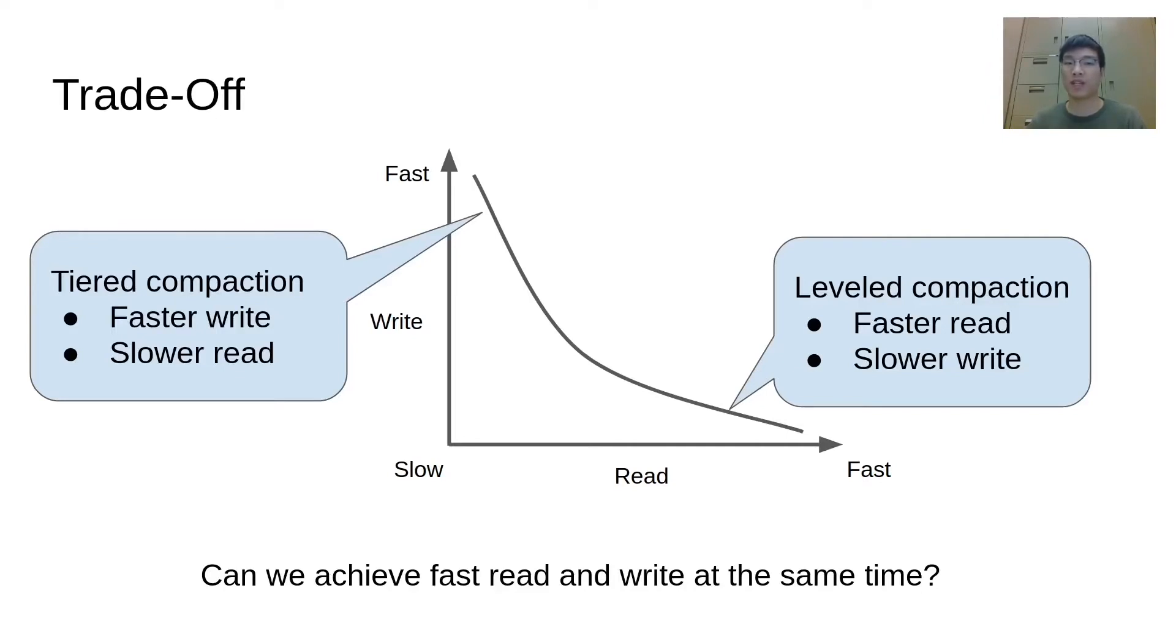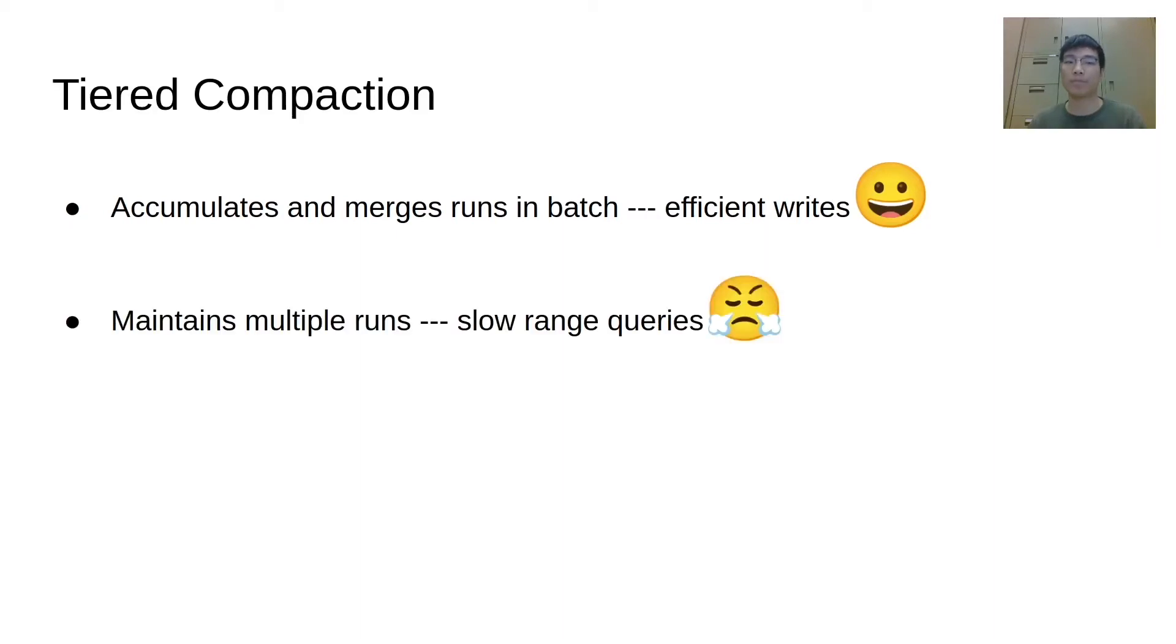Because leveled compaction aggressively sort-merged data to maintain one run each level, there is not much we could do to improve writes based on this model. On the other hand, the tiered compaction accumulates and merges runs in batch, which is write-efficient. At the same time, it maintains multiple runs, which leads to slow range queries. So we think, can we achieve a faster range query even if we have many runs?